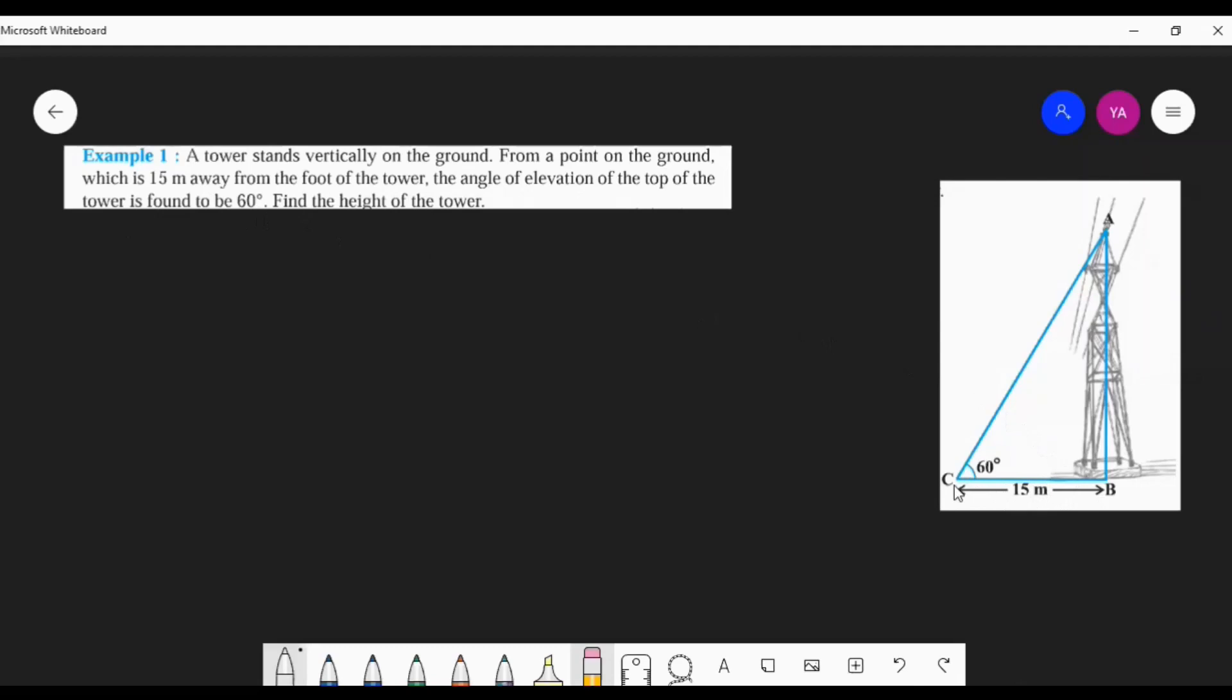And the angle of elevation from that point to the point on the top of the tower is 60°. That is given. And the question is to find the height of the tower.